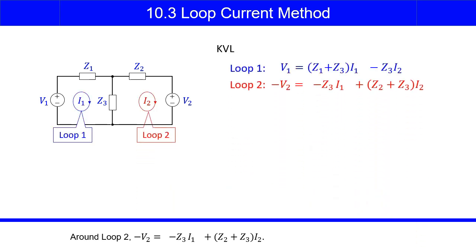Around loop 2, negative V2 equals negative Z3 I1 plus Z2 plus Z3, times I2.